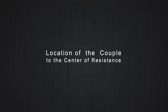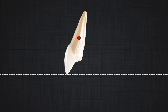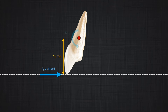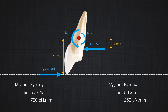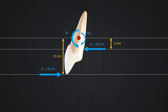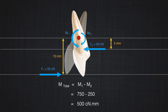The third principle of the couple is that the location of application of the couple is not important for the moment produced. For example, applying a force of 50 centinewtons at 15 millimeters from the center of resistance on one side, and 50 centinewtons at 5 millimeters on the same side, F1 produces a counterclockwise moment while F2 produces a clockwise moment. These two moments deduct from each other, yet the total moment in the system is still 500 centinewton-millimeters.